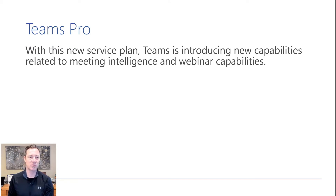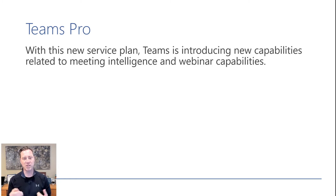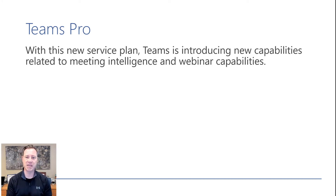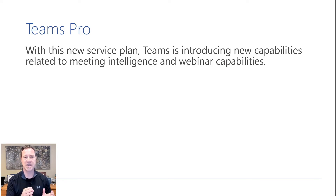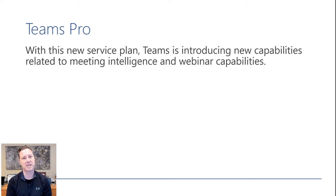Teams Pro was just announced within the last week, and there's been chatter around it since it hit the message center. This is really more around the idea of adding meeting intelligence and webinar capabilities to lower-level SKUs like E1 or F1. From what I understood, if you've got an E3 or E5, all these features are already included. We'll have to wait and see what Microsoft says as more details come out, but it's another license SKU to pay attention to.